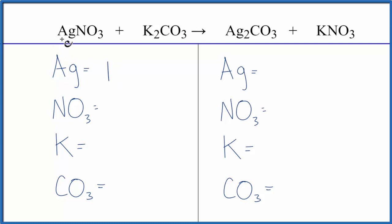Ag, we have one, and then NO3 is a polyatomic ion. It appears here and here, so we're going to count this nitrate ion, this polyatomic ion, as just one item. That'll make balancing much easier. We have two potassiums, and then we have another polyatomic ion, the carbonate ion. It appears here, and we also have it on the other side of the equation. So we can count that as one item right there.